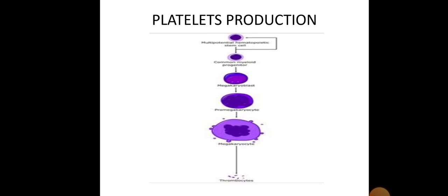First we discuss platelet production and how they are produced. Platelets are produced first from the multipotent stem cell, which gives rise to the common myeloid progenitor. This common myeloid progenitor gives rise to the megakaryoblast. The megakaryoblast gives rise to the promegakaryocyte, which ultimately matures into the megakaryocyte. From the megakaryocyte, the cytoplasmic budding cycles are broken down, giving rise to platelets, also known as thrombocytes.